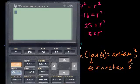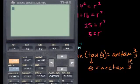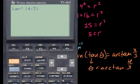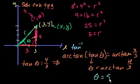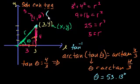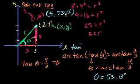Most people don't have arctan of 4 thirds memorized, so let's use the calculator. Press second, then inverse tangent of 4 divided by 3. With the calculator already set to degree mode, it gives you 53.13 degrees. So theta equals 53.13 degrees. We already knew we could specify this point as x equals 3, y equals 4. We can also specify it as r equals 5 and theta equals 53.13 degrees — orient yourself 53.13 degrees counterclockwise from the x-axis and walk five units. That's all polar coordinates are telling you.